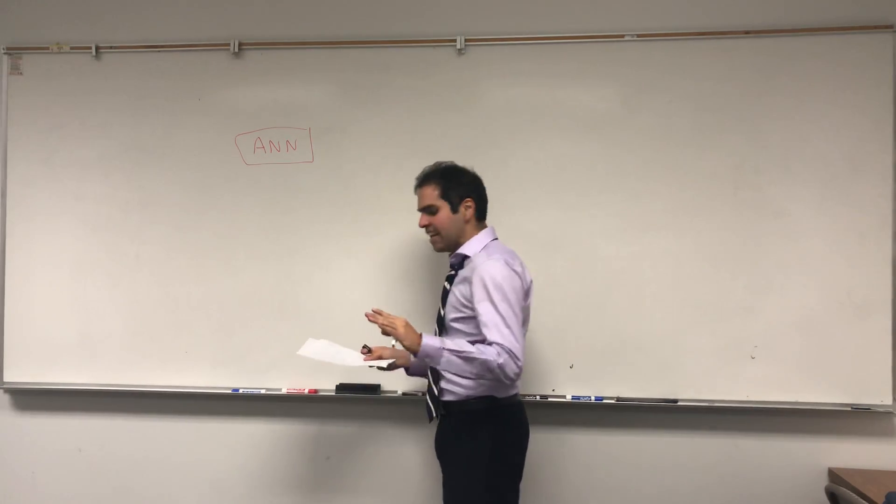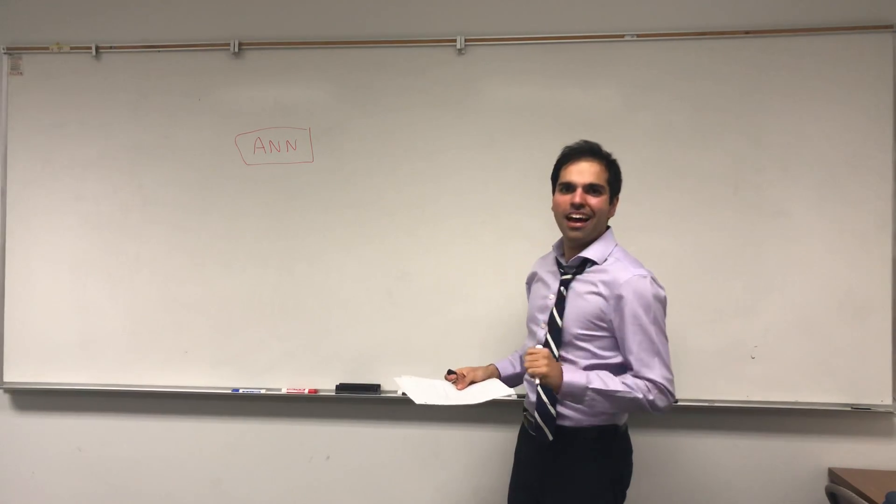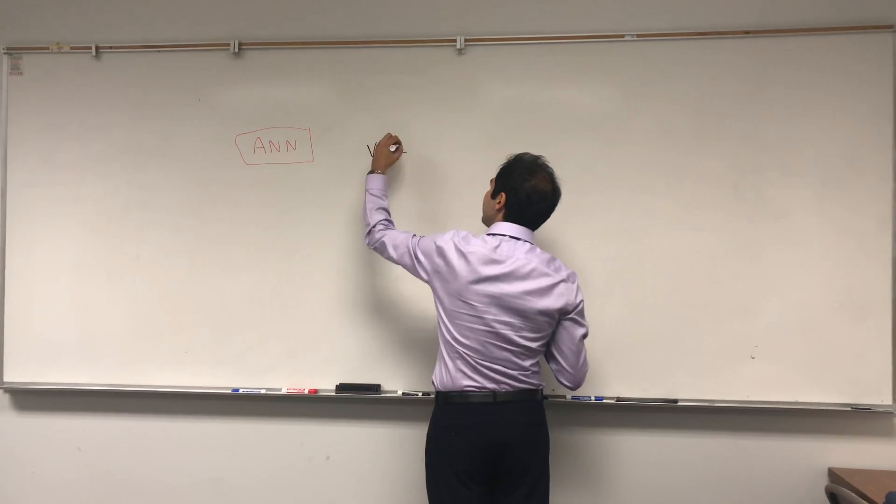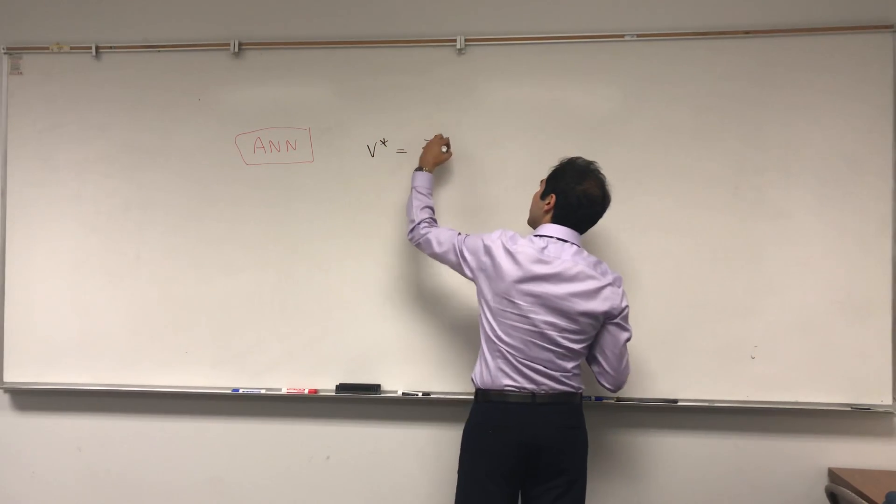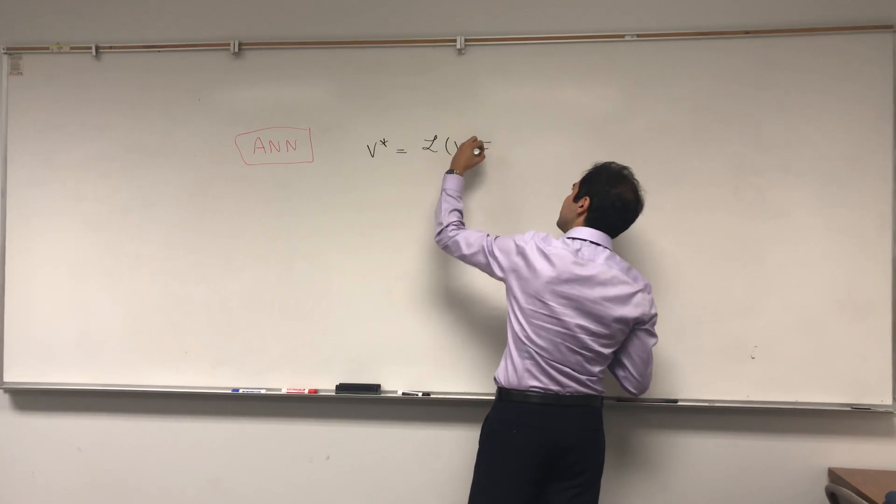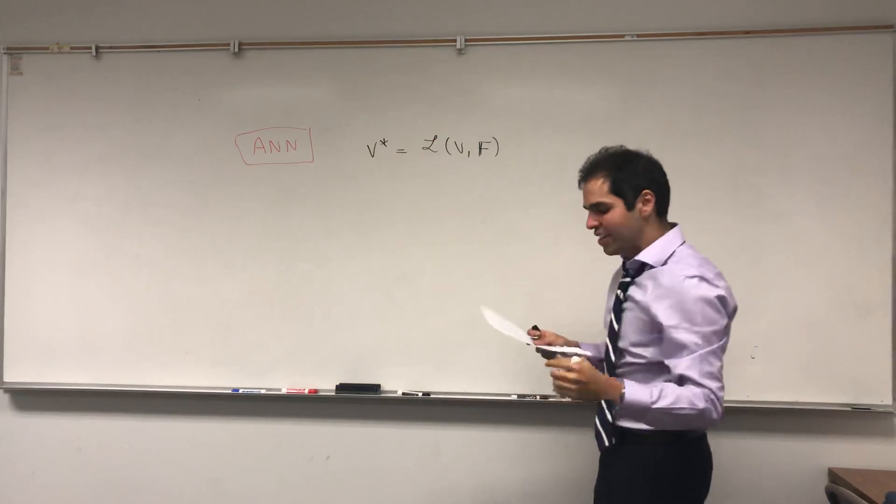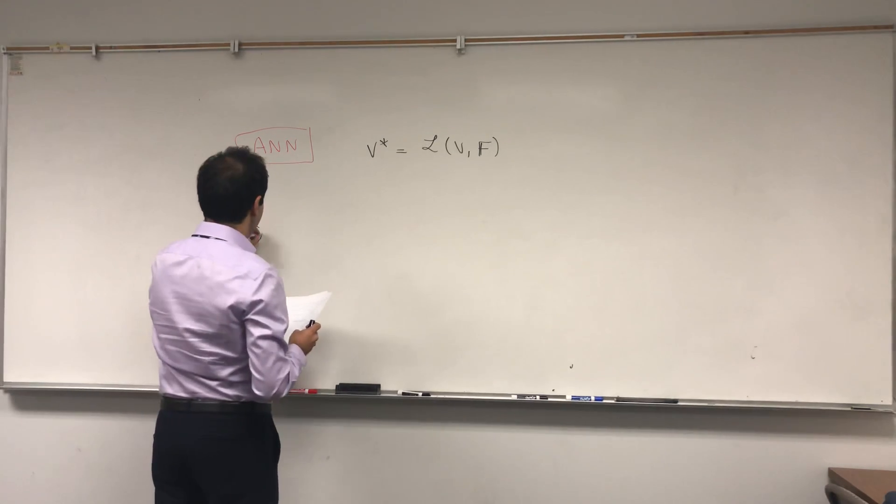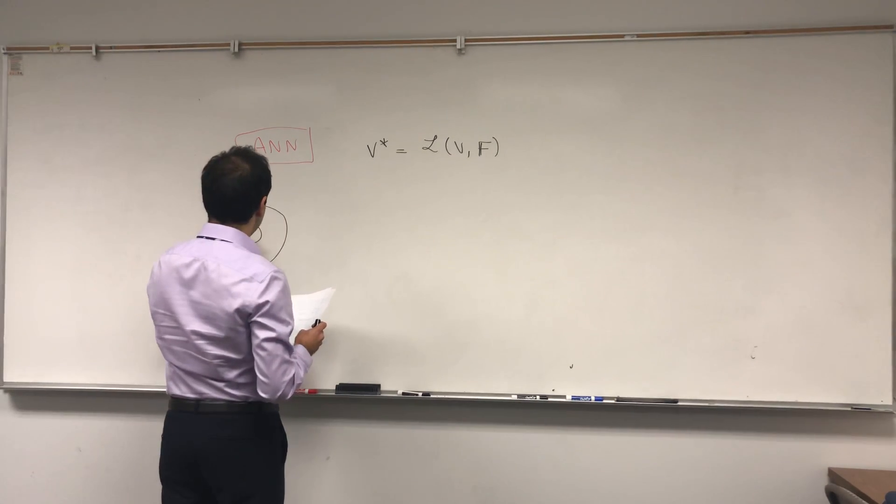So what is the annihilator? It has to do with dual spaces, so let me remind you what a dual space is. V star is the set of linear transformations from V to a field. In particular, suppose you have a subspace of V, and in fact any subset would work.